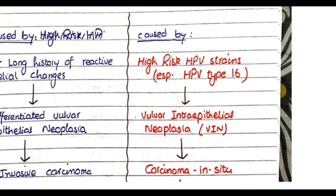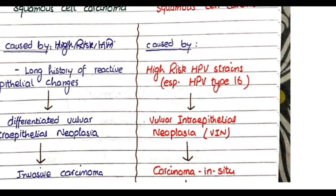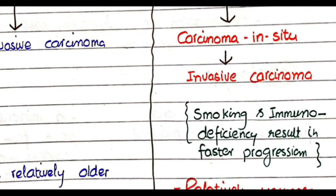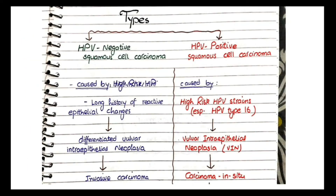Intraepithelial neoplasia means the tissue itself is non-neoplastic, but it contains cells that are malignant in their cytology. As this condition progresses, it results in carcinoma in situ, which further progresses into invasive carcinoma — where cells begin invading the basement membrane and form a separate mass. This is the timeline of HPV-positive squamous cell carcinoma.